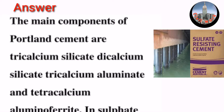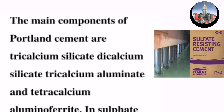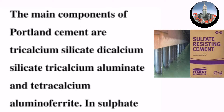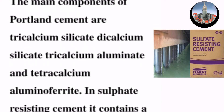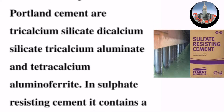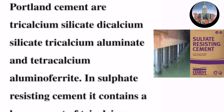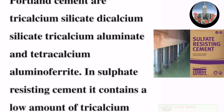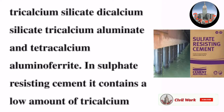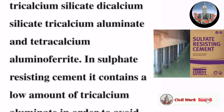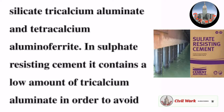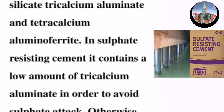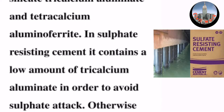The main components of Portland cement are tricalcium silicate, dicalcium silicate, tricalcium aluminate, and tetracalcium aluminoferrite. In sulfate-resisting cement, it contains a low amount of tricalcium aluminate in order to avoid sulfate attack.